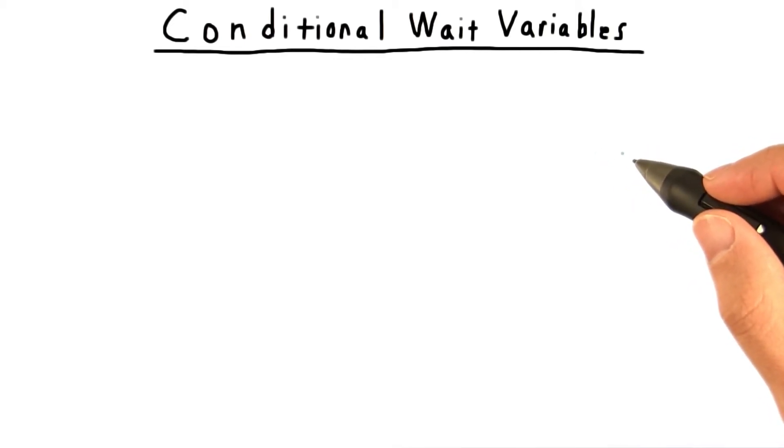Most simply, conditional wait variables allow you to take one thread off the scheduling queue until there is a signal from another thread that it should be put back on.